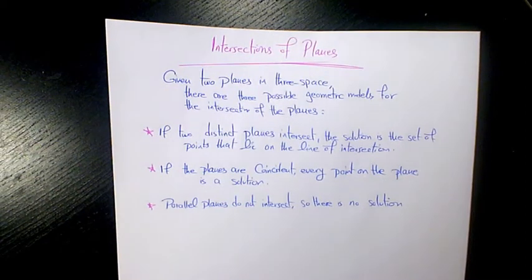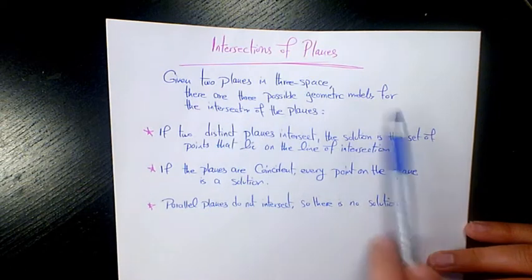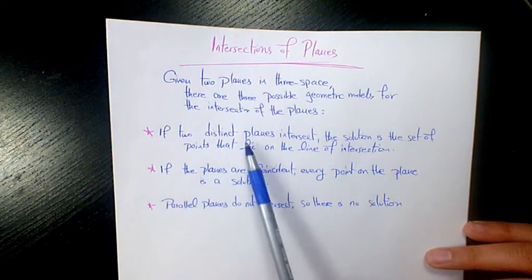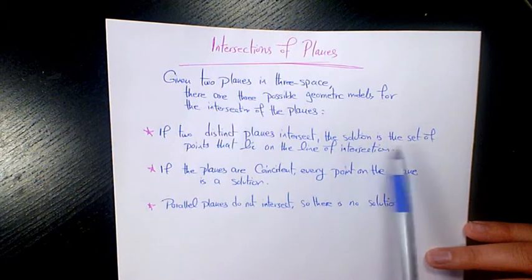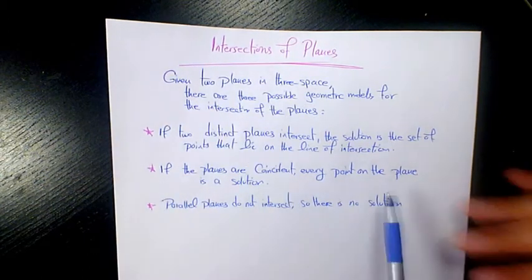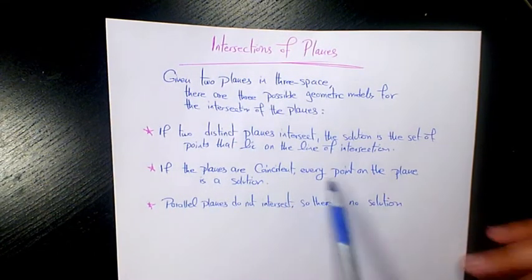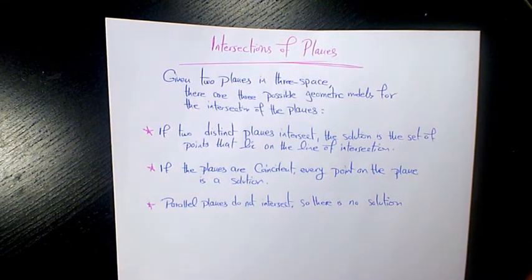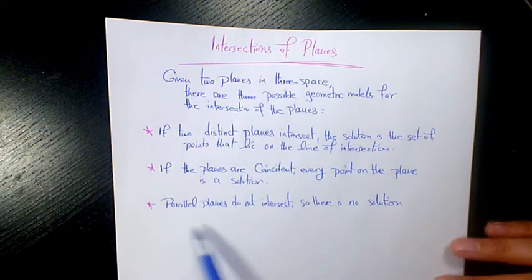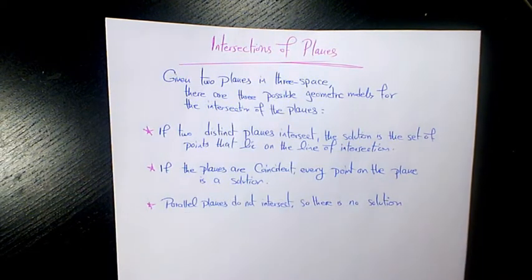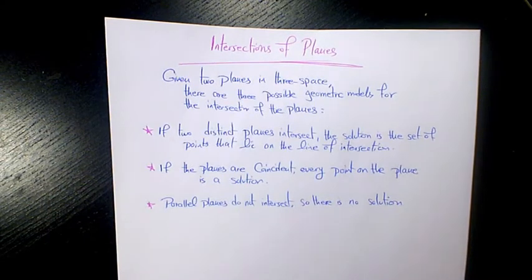What's up guys, this is Massey, welcome to another video. In this video I want to talk about intersections of planes. When we have two planes in three-space, there are three possible cases. One: if two distinct planes intersect, the solution is the set of points that lie on the line of intersection. Two: if the planes are coincident, every point on the plane is the solution, so we have many solutions. The third case is parallel planes — they don't intersect, so we have no solution.